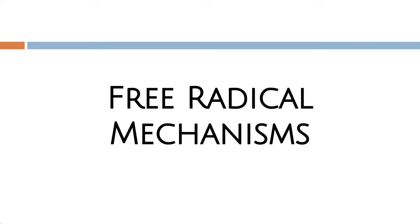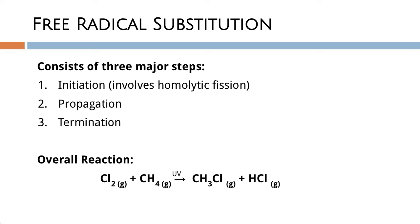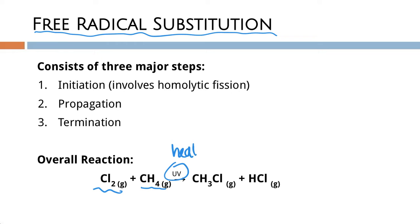In this video we are going to go over the free radical mechanisms. Specifically, we want to look at the free radical substitution mechanism that happens for the substitution of alkanes with halogens. If we took methane and reacted it with chlorine with UV or heat as our catalyst, we would create chloromethane and HCl as our other major product.